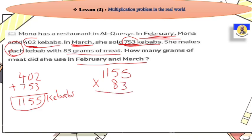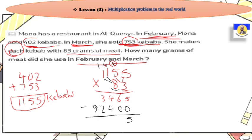Using the standard algorithm: starting with 3 — 3×5=15, write 5 carry 1; 3×5=15 plus 1=16, write 6 carry 1; 3×1=3 plus 1=4. Then for the 8 (which is really 80), put 0 first; 8×5=40, write 0 carry 4; 8×5=40 plus 4=44, write 4 carry 4; 8×1=8 plus 4=12, write 2 carry 1; 8×1=8 plus 1=9. Then make plus: 5, 0 gives 5; then 6, 8, 5, 9.